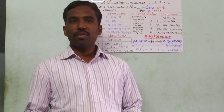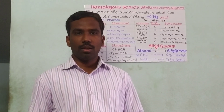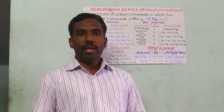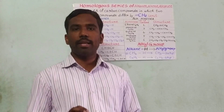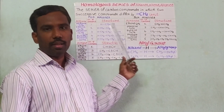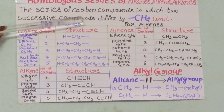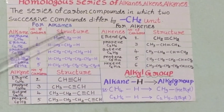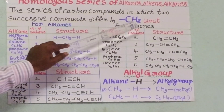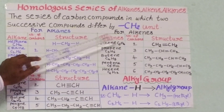Hi students, in the last video we discussed the nomenclature of alkanes, alkenes and alkynes. Today we discuss a new concept: the homologous series of alkanes, alkenes and alkynes. The series of carbon compounds in which two successive compounds differ by one CH2 unit is called a homologous series.